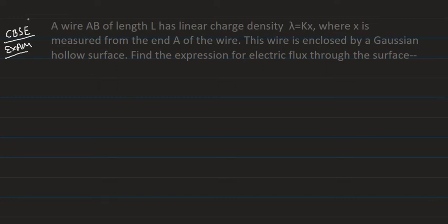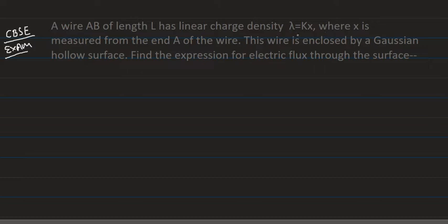Hello friends, good evening to all of you. I am going to solve a problem related to electric flux. We have a wire AB of length capital L with linear charge density lambda equal to kx, where x is measured from end A of the wire, and the wire is enclosed by a Gaussian hollow surface. Find the expression for the electric flux.